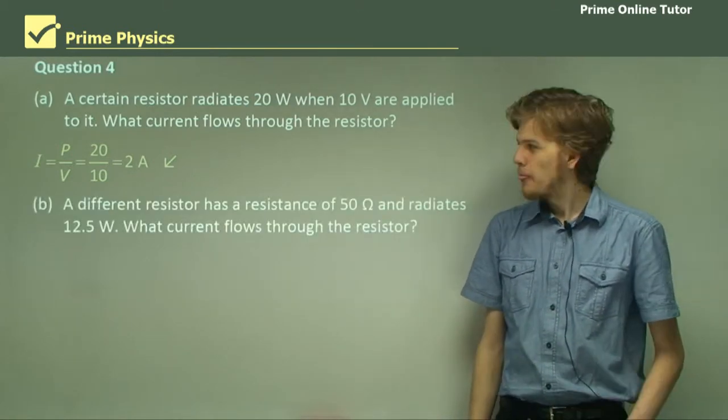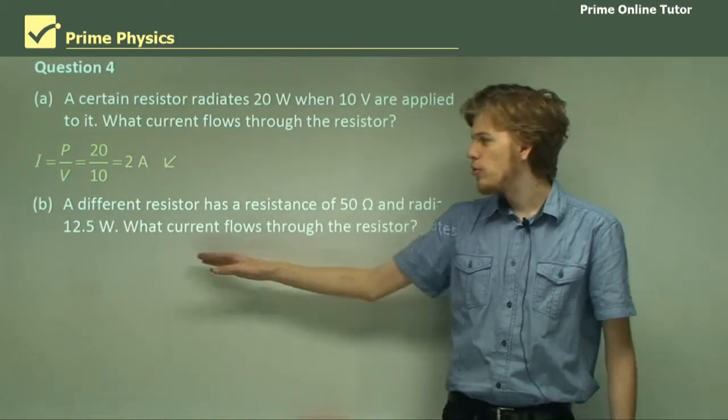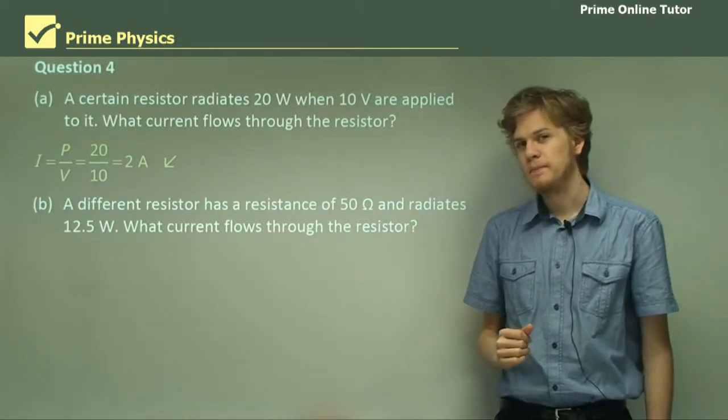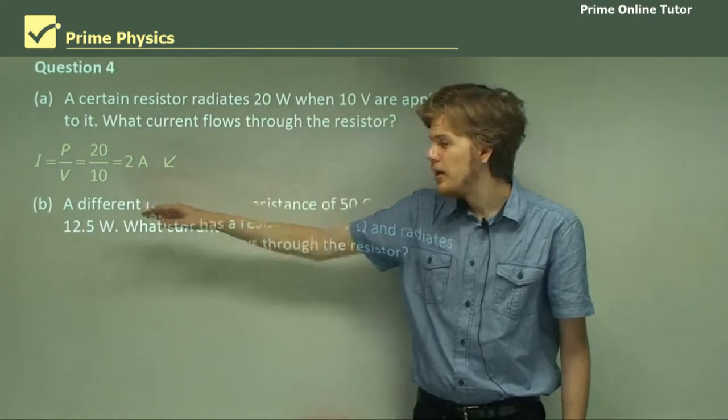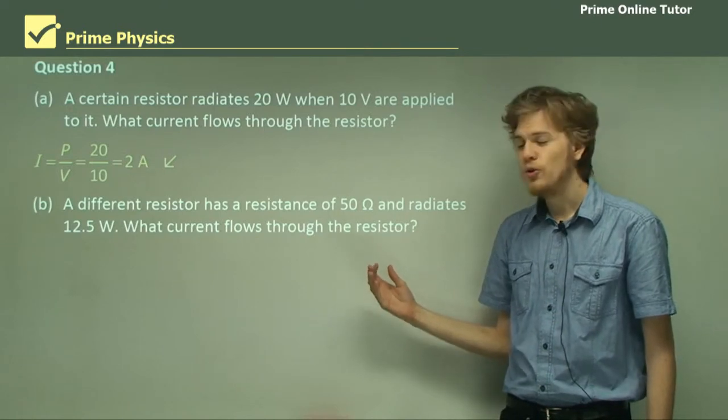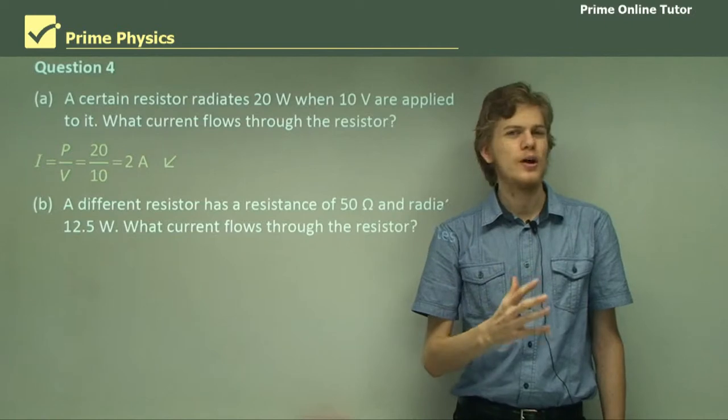Part B. A different resistor has a resistance of 50 ohms and radiates 12.5 watts. What current flows through the resistor? Now in this case, we can't use the same equation as we did here, because this time we don't know the voltage across it. So instead, we use a different equation. P equals I squared R.